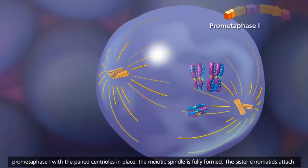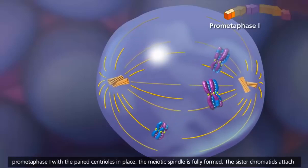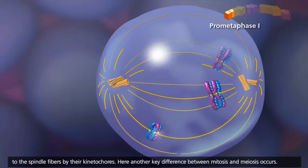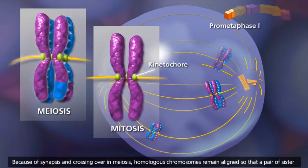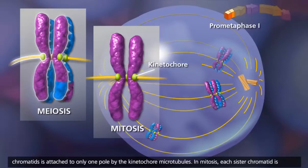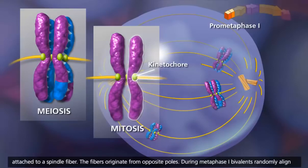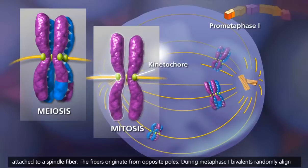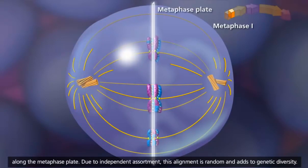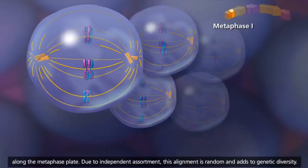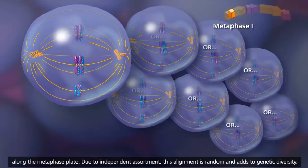In prometaphase I, with the paired centrioles in place, the meiotic spindle is fully formed. The sister chromatids attach to the spindle fibers by their kinetochores. Here, another key difference between mitosis and meiosis occurs: because of synapsis and crossing over, homologous chromosomes remain aligned, so that a pair of sister chromatids is attached to only one pole by the kinetochore microtubules. In mitosis, each sister chromatid is attached to a spindle fiber originating from opposite poles. During metaphase I, bivalents randomly align along the metaphase plate. Due to independent assortment, this alignment is random and adds to genetic diversity.